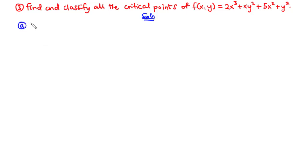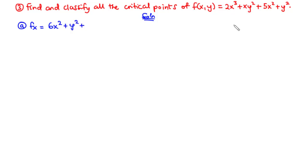So we have fx, and that is equal to: we differentiate with respect to x and get 6x squared. We differentiate x and get 1, so 1 times y squared gives us y squared. Then we differentiate 5x squared with respect to x and get 10x. We differentiate y squared and that goes to 0.